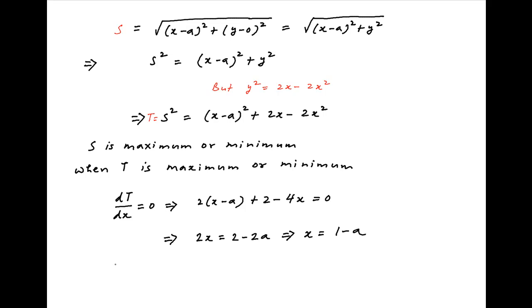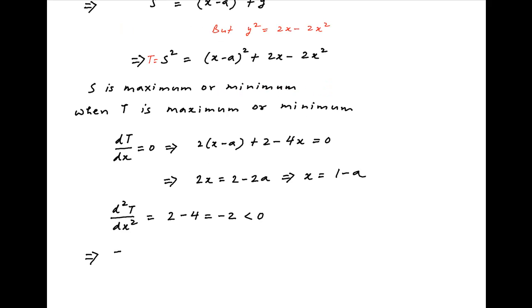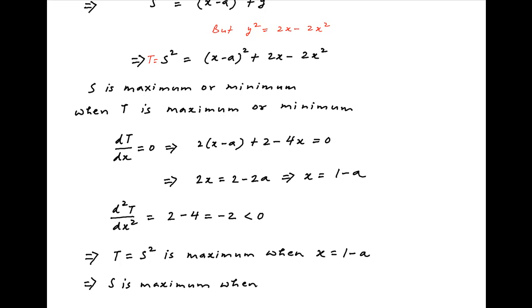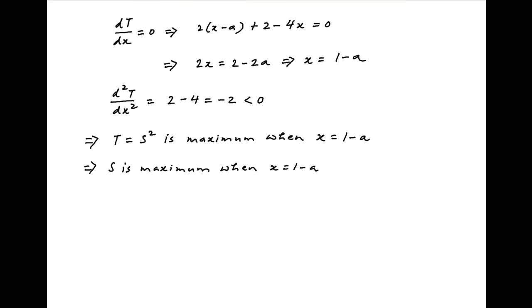To determine whether this is a maximum or minimum, we evaluate the second derivative of t with respect to x, which equals 2 minus 4, which equals minus 2 — negative. Therefore t, which equals s squared, is maximum when x equals 1 minus a, which implies the distance s reaches its maximum when x equals 1 minus a.